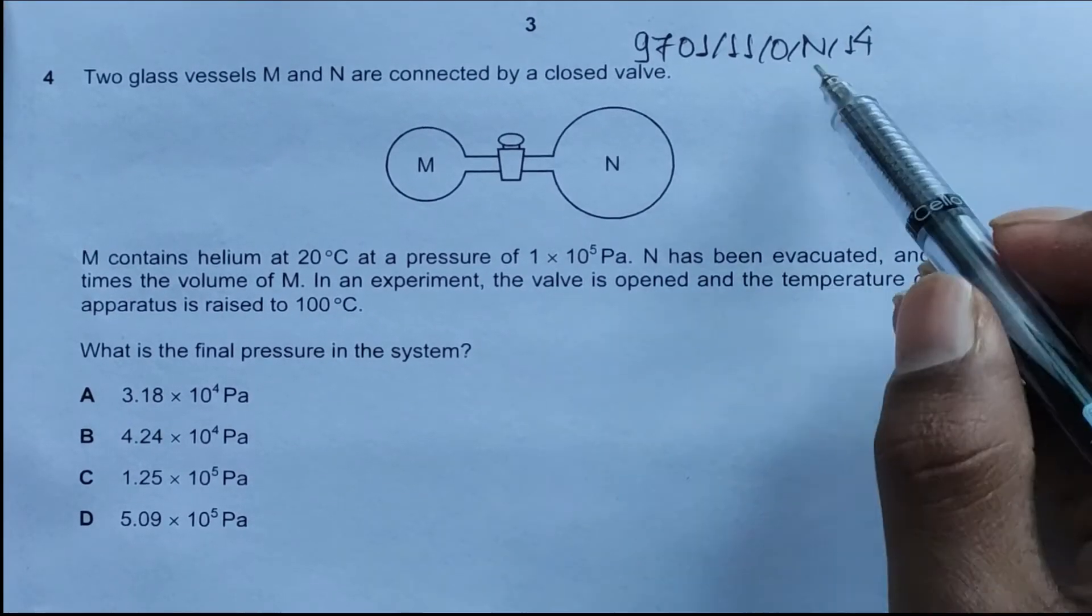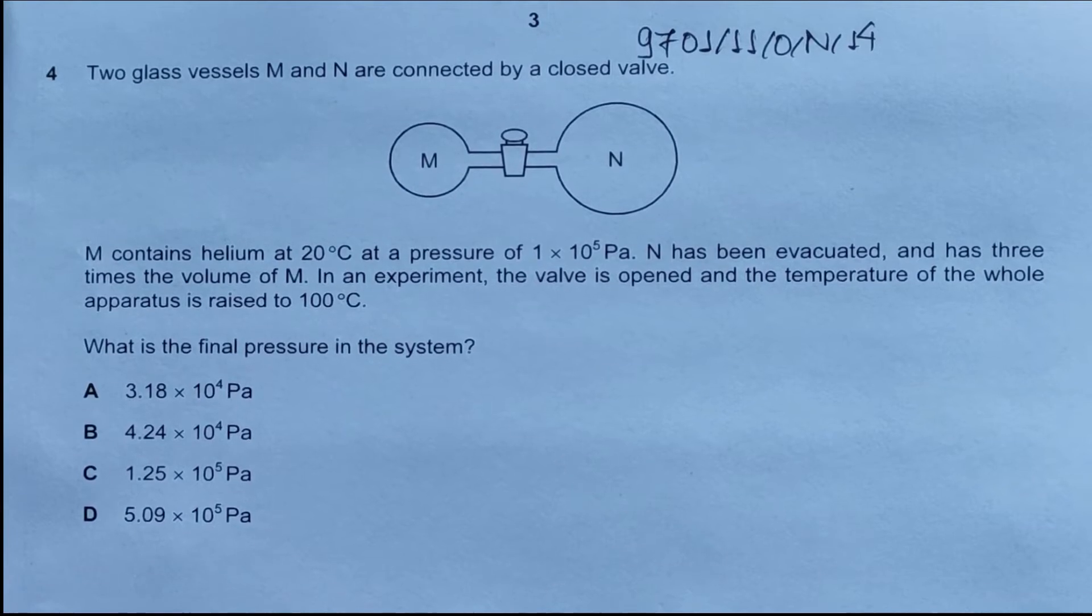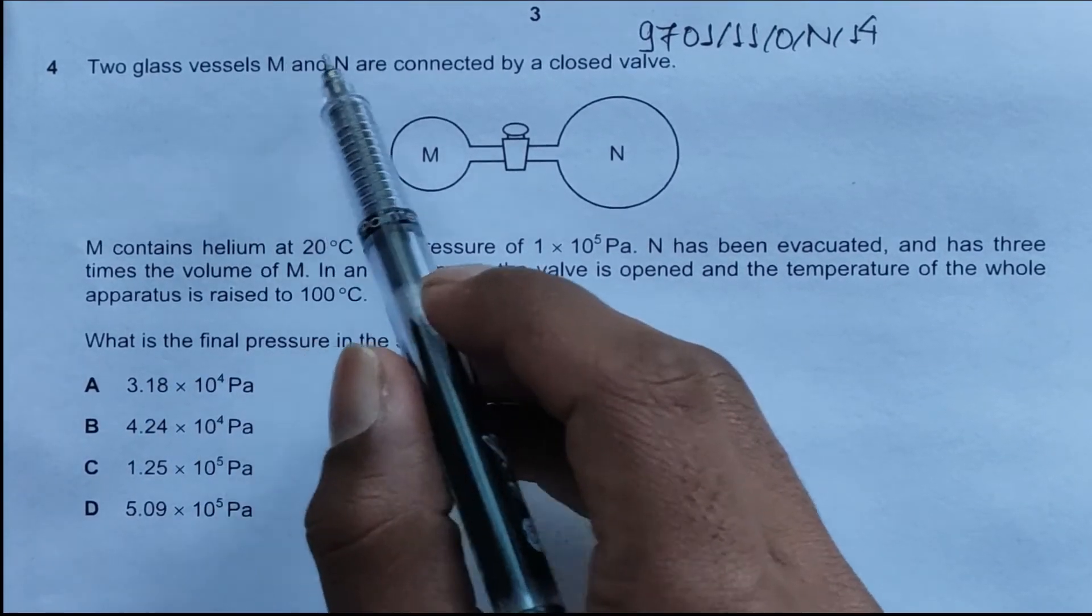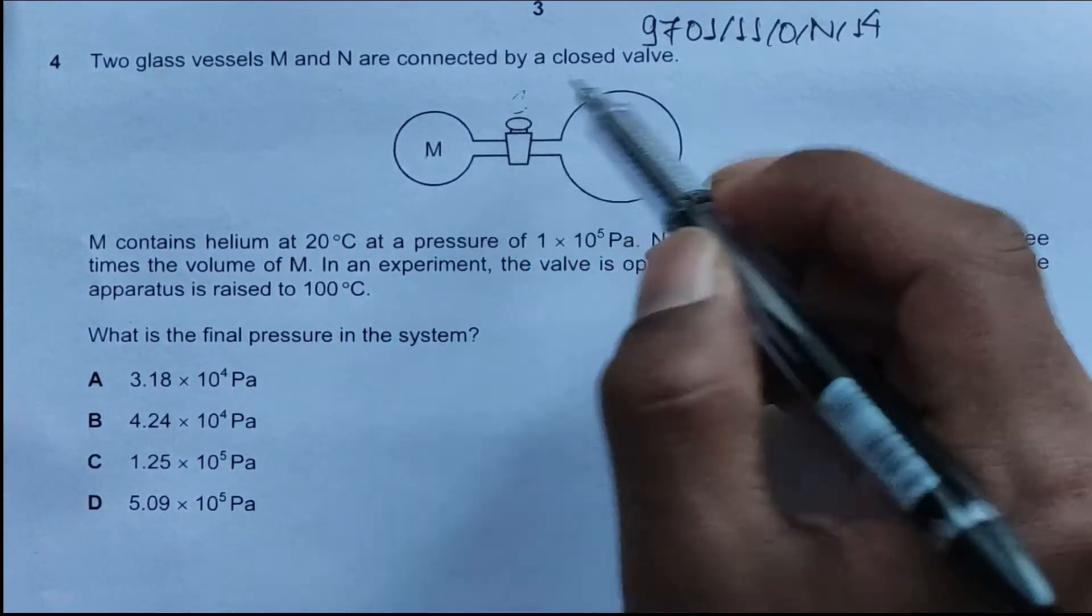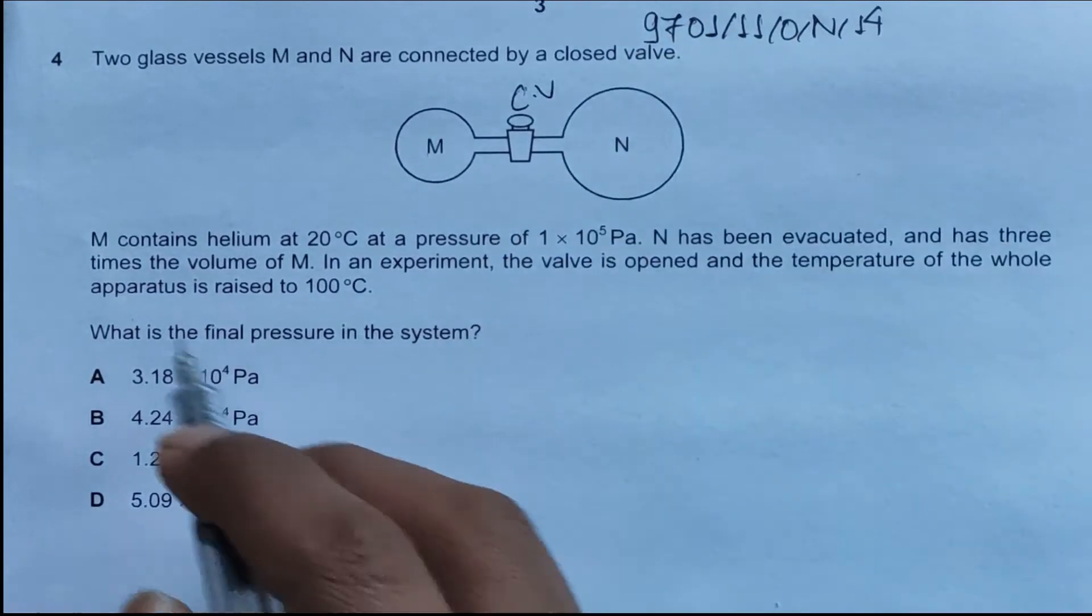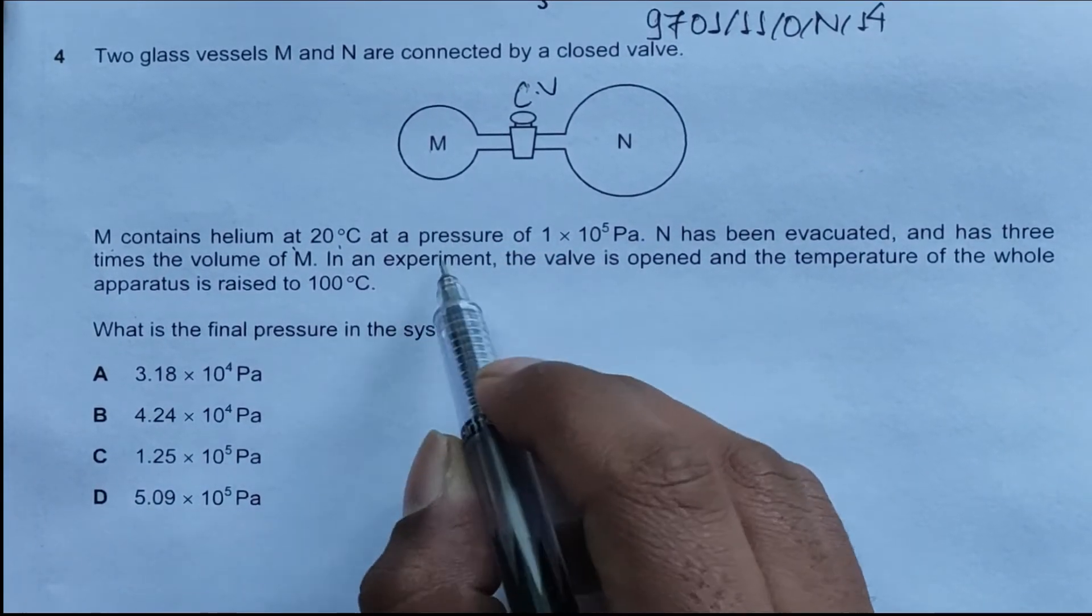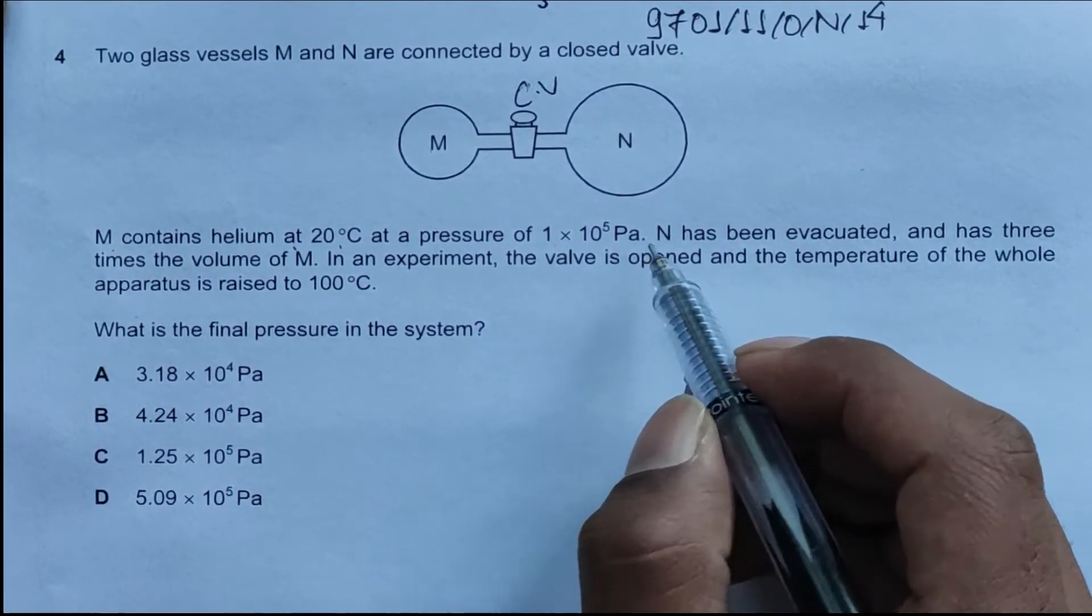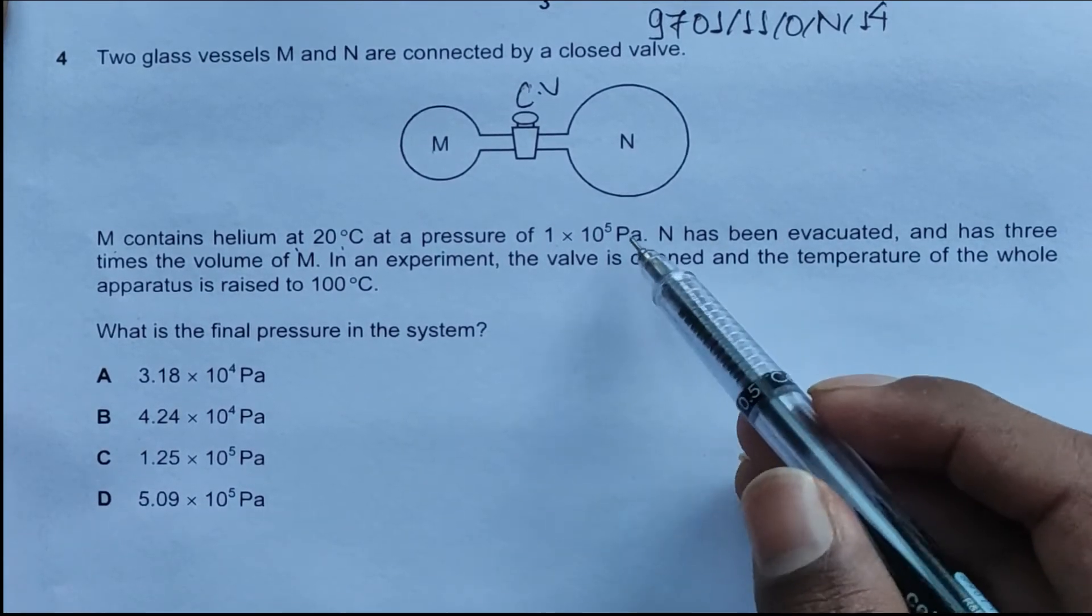Hello everyone, this is a November 14 question paper, question number 4, concerned with the chapter on ideal gases. The question states two glass vessels M and N are connected by a closed valve. M contains helium at 20 degrees Celsius at a pressure of 1×10^5 Pascal.